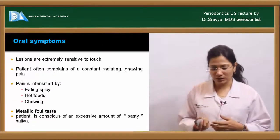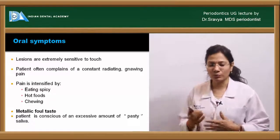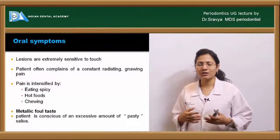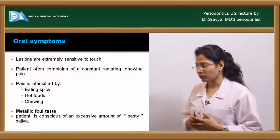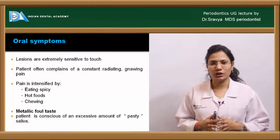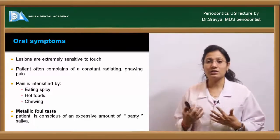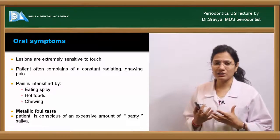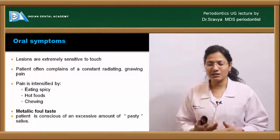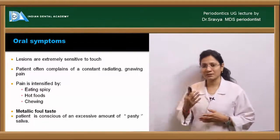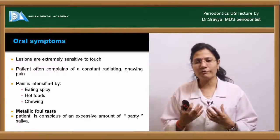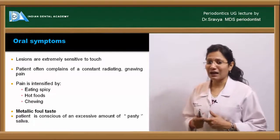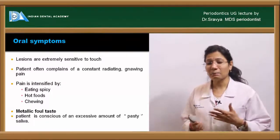Oral symptoms: the lesions are very sensitive to touch and very painful because of ulceration and necrosis. The patient will complain of a constant radiating gnawing type of pain, and the tissues are very sensitive to eating anything spicy or hot, or while chewing. The patient will also complain of a metallic taste and a pasty kind of saliva.